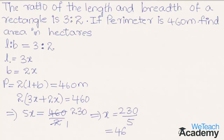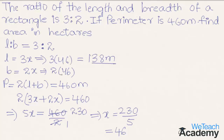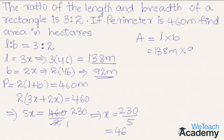Substituting the value of x into length: 3 into 46 = 138 meters. Substituting into breadth: 2 into 46 = 92 meters. The area of the rectangle equals L into B, so substituting: 138 meters into 92 meters gives an area of 12,696 square meters.